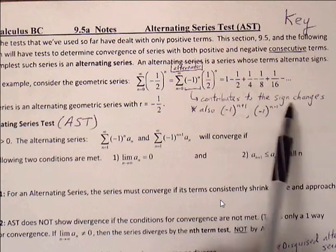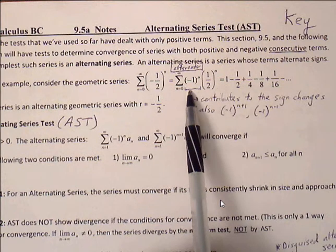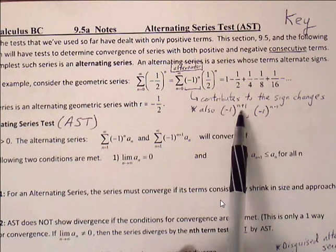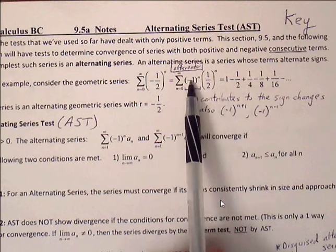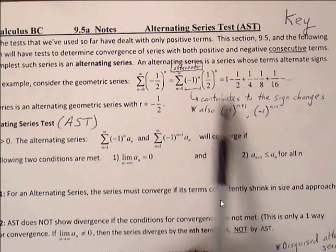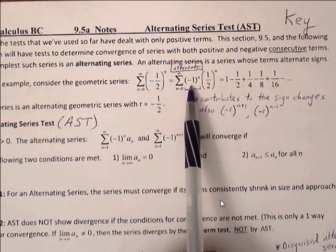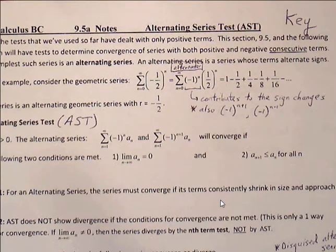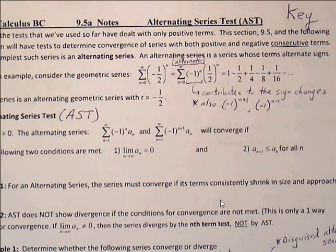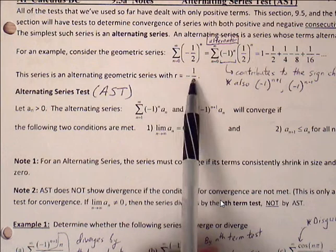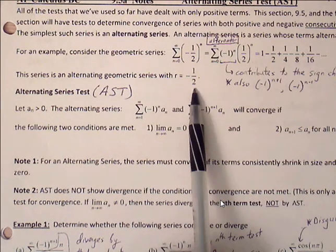The alternator contributes to the sign change. You may also see this represented as (-1)^(n+1) or (-1)^(n-1), depending on whether we want the first term to be positive or negative. This series is an alternating geometric series with ratio of negative 1/2.